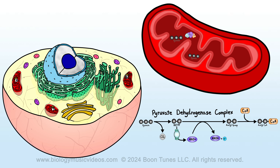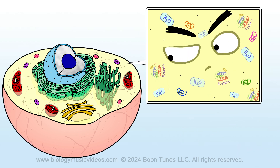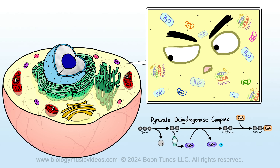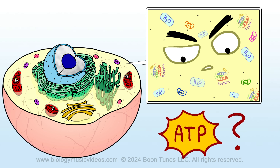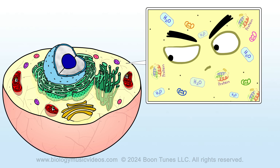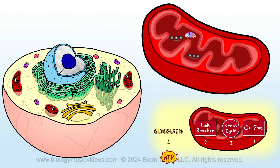Acetyl CoA is what stage three of cell respiration puts to use. So the link reaction generates CO2, and NADH, a proton, and acetyl CoA are also formed in this pathway. The link reaction takes place two times. The cytosol said in distress: you make those products, but nevertheless, you still did not explain to me how you generate ATP.